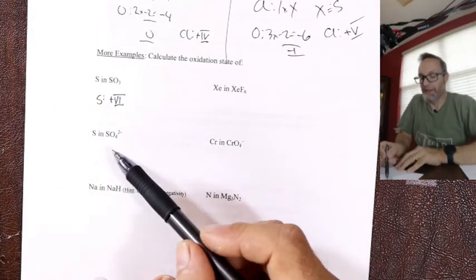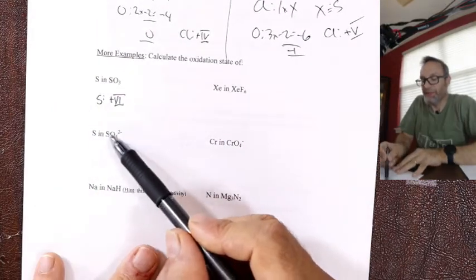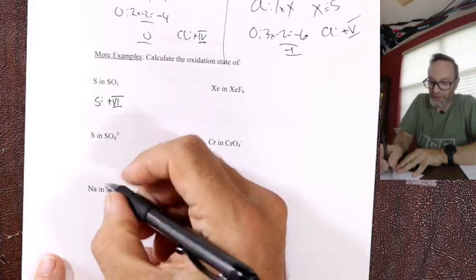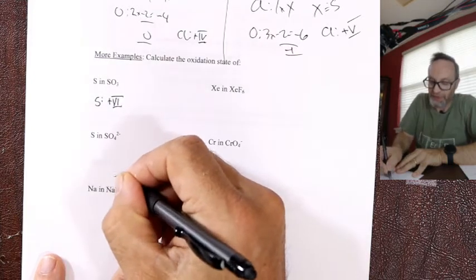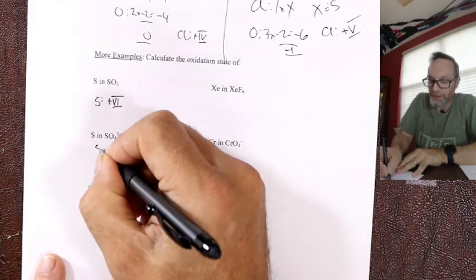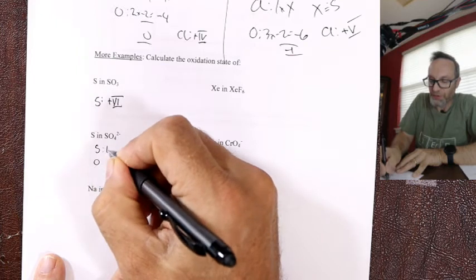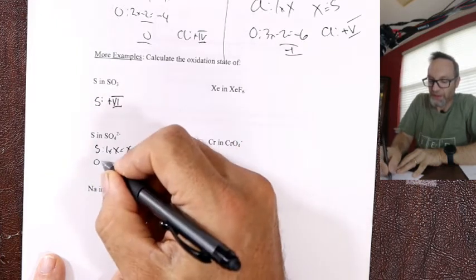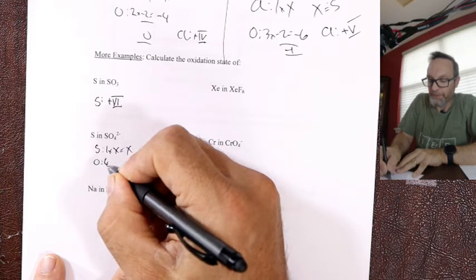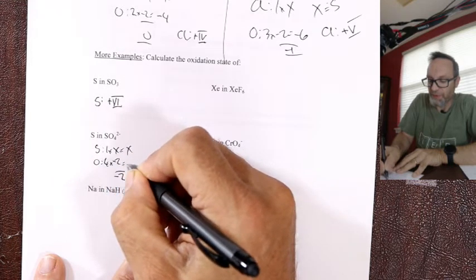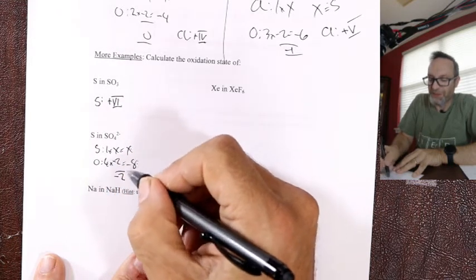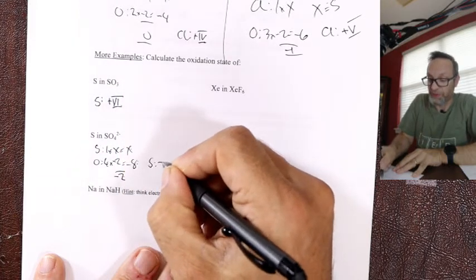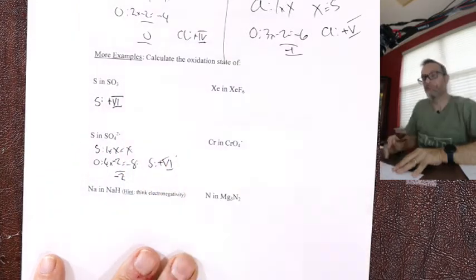For SO₄²⁻: I've got sulfur and oxygen — it adds up to minus two. One sulfur times its magic oxidation state, and four times minus two is minus eight. Something combined with minus eight is minus two — it's six again. Sulfur is in column six, so we sort of expect a plus six oxidation state.